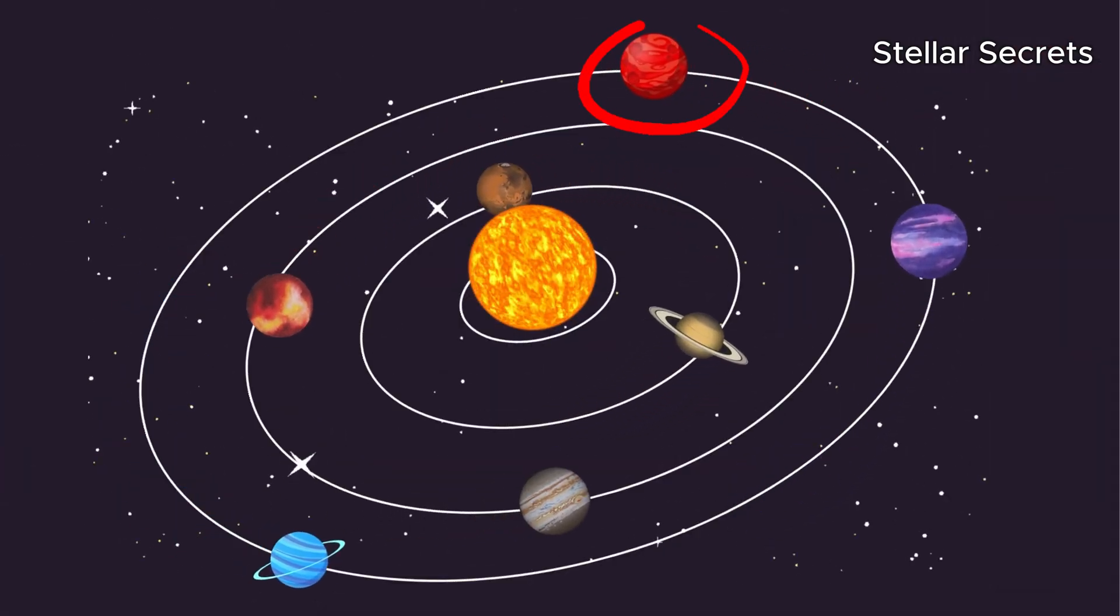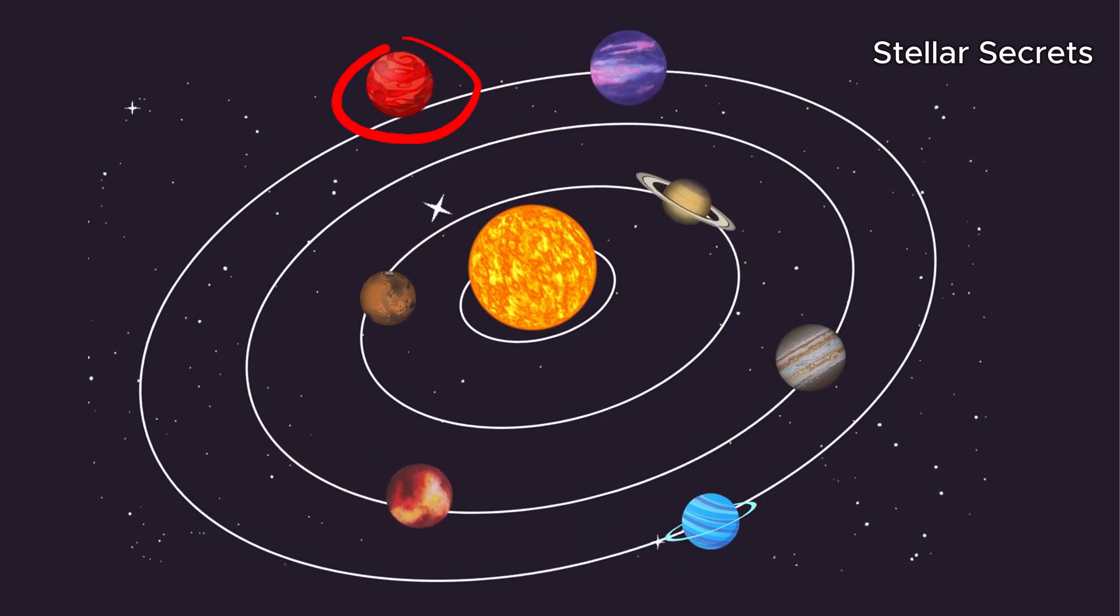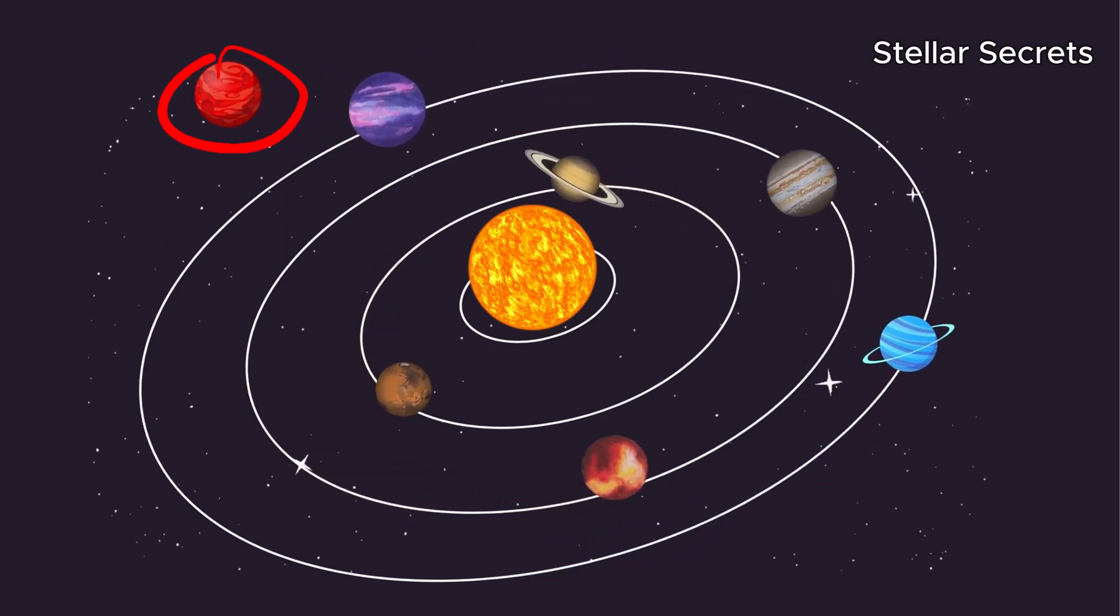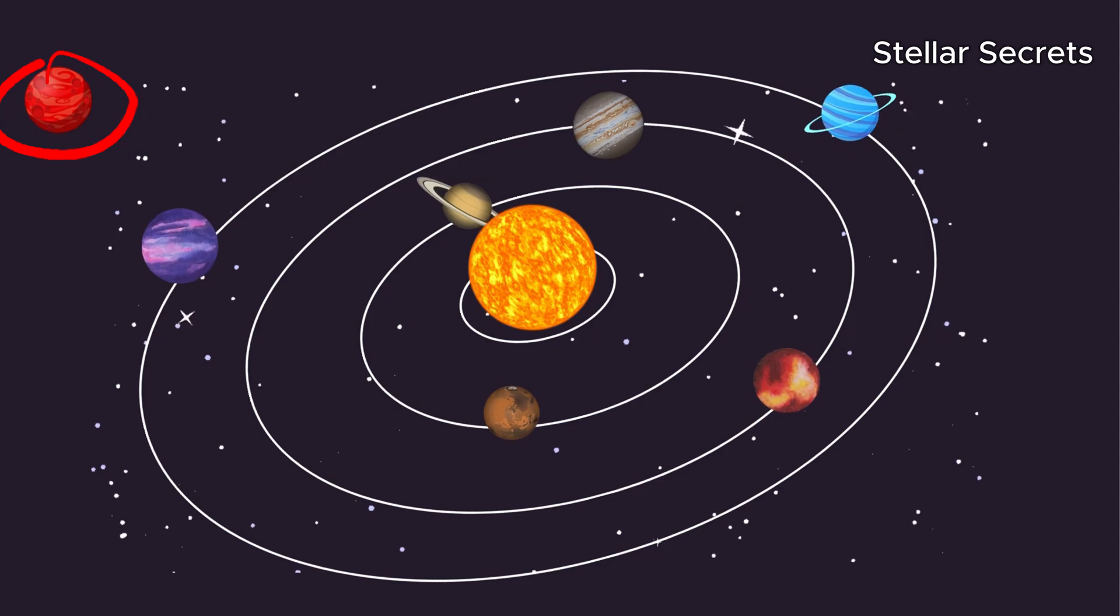Rogue planets, thrown out of their star systems, roam the galaxy alone. They don't orbit a sun, making their movements unpredictable and dangerous.